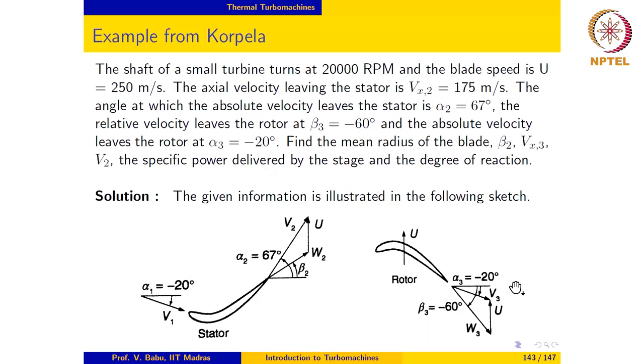And it is also given that vx2 is 175 meters per second. So vx2 would be this value, this segment. If you extend this, then this would be vx2. vx2 is given as 175 meters per second.